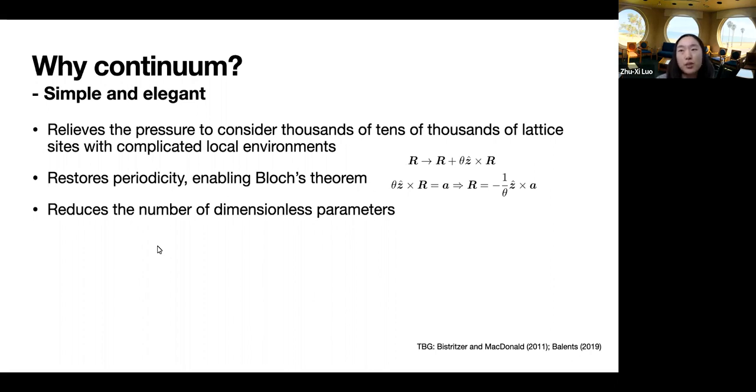Also, the continuum theory restores periodicity in a generically only quasi-periodic system. For example, for a rigid twist of an angle theta, at the rotation center, everything is aligned. Then at some other position, capital R, if everything gets aligned again, we can have some periodicity. So periodicity requires this term to be a lattice vector of the original lattice. And then solving capital R will get this. So we see periodicity requires R to have this form. And furthermore, capital R must also be some original lattice vector. However, this is not true for generic values of theta.